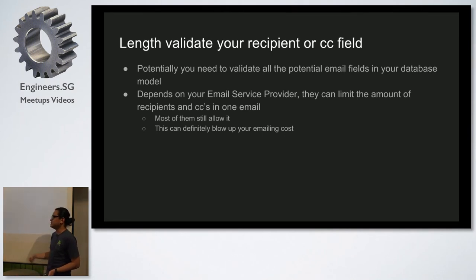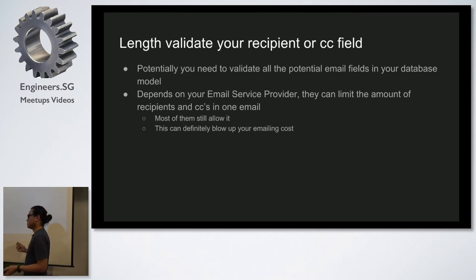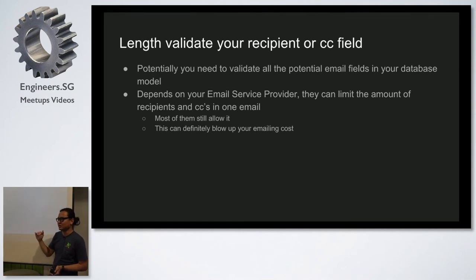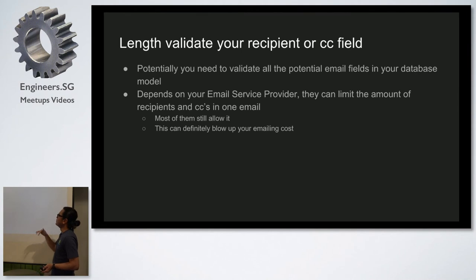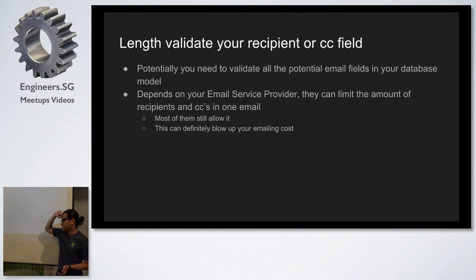In our case it's the recipient and CC fields, but potentially in your app all the fields and attributes in your model where you can send email need to be validated, so they don't cause you to send thousands of emails at once. SendGrid has a limit of 1,000 recipients in the recipient field — they actually allow that. But depending on your ESP, they might limit the amount of recipients. This can blow up your emailing costs: if someone can send 1,000 emails at once using SendGrid, that's $1, and if it goes on repeatedly, in a month it can become a lot of money.